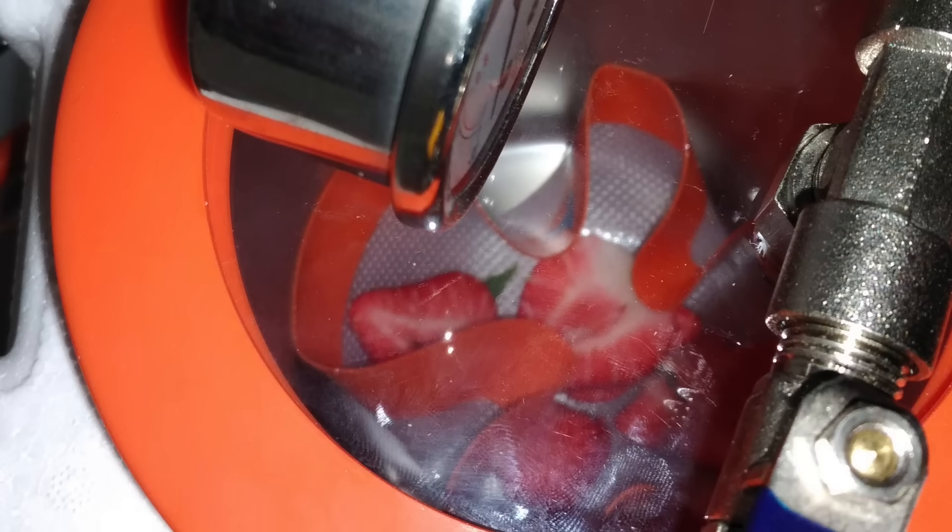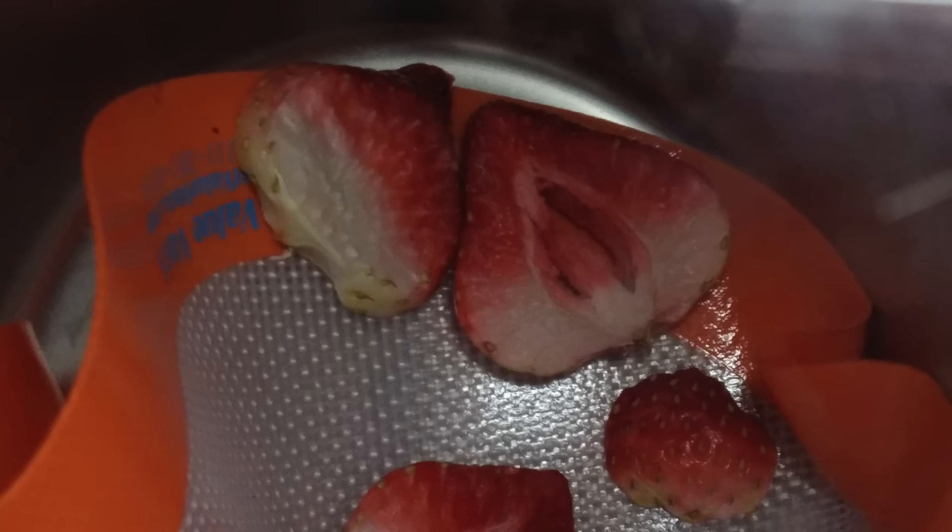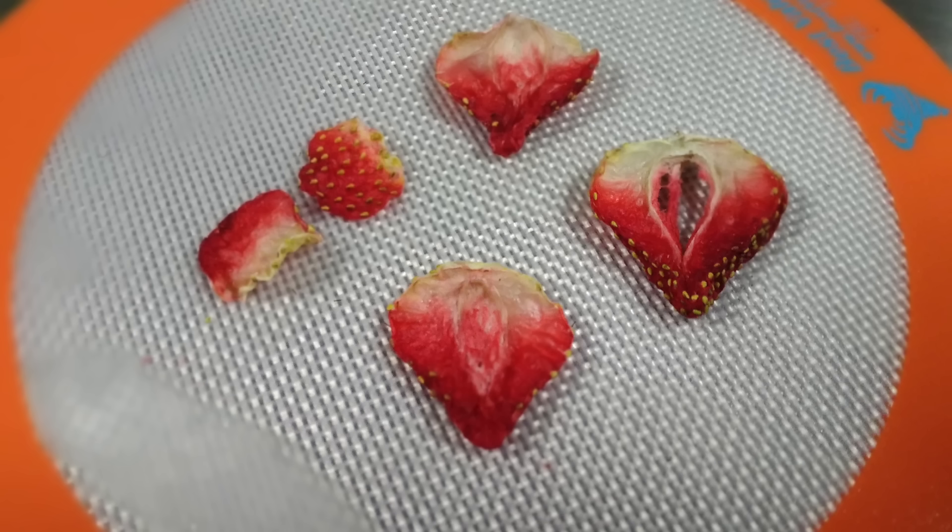With everything running, all we have to do is wait. Keep the water trap as cold as possible over the next 6-14 hours while the items dry. If everything goes according to plan, this is what you should end up with, some perfectly dry strawberries that still have most of their shape.